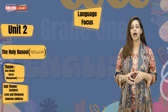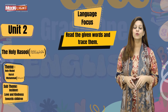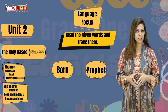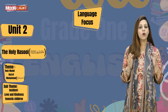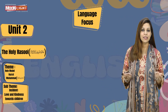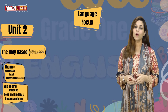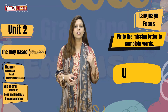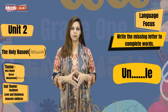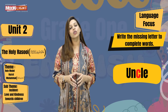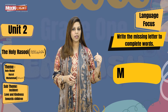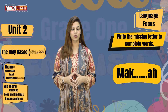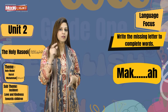On page number 30, you have been given some words. I am going to read those words, but your task is to trace those words while re-reading them. The words are: born, prophet, honest, and brought up. Next, you have been given some incomplete words. You are going to pronounce those words and then infer which letter to put in the blank. The first word is UN_LE — the word is UNCLE, so C is missing, making it U-N-C-L-E. The next word is M-A-K-_-A — the word is MAKKAH and K is missing.